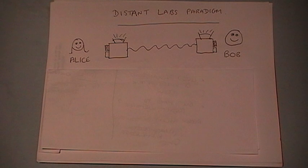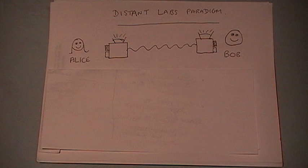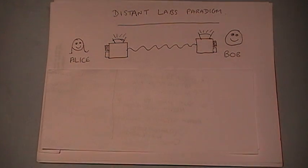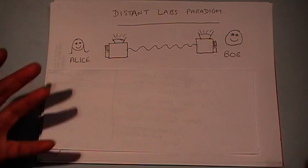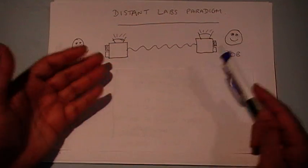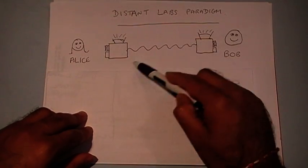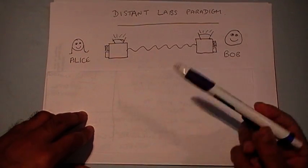I want you to rewind and pretend you don't know anything about science, and imagine what it's like to be a scientist working from scratch. So imagine that we've got two scientists, Alice and Bob, and they're very far apart, but they've got some systems which they want to investigate. These systems I'm going to represent by two boxes.